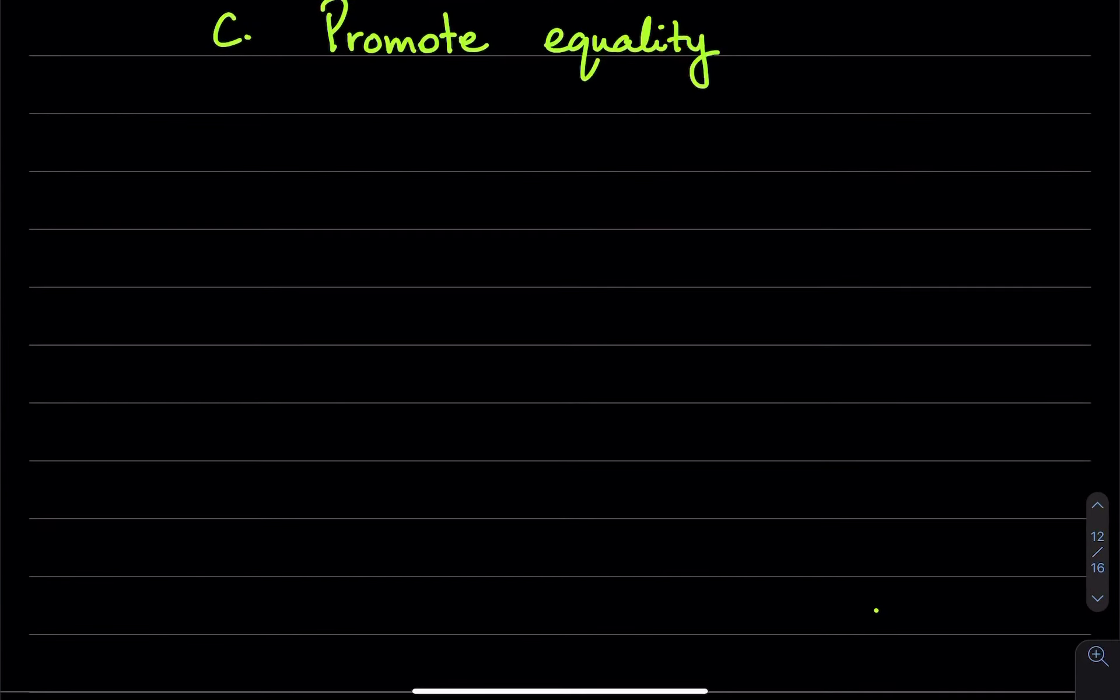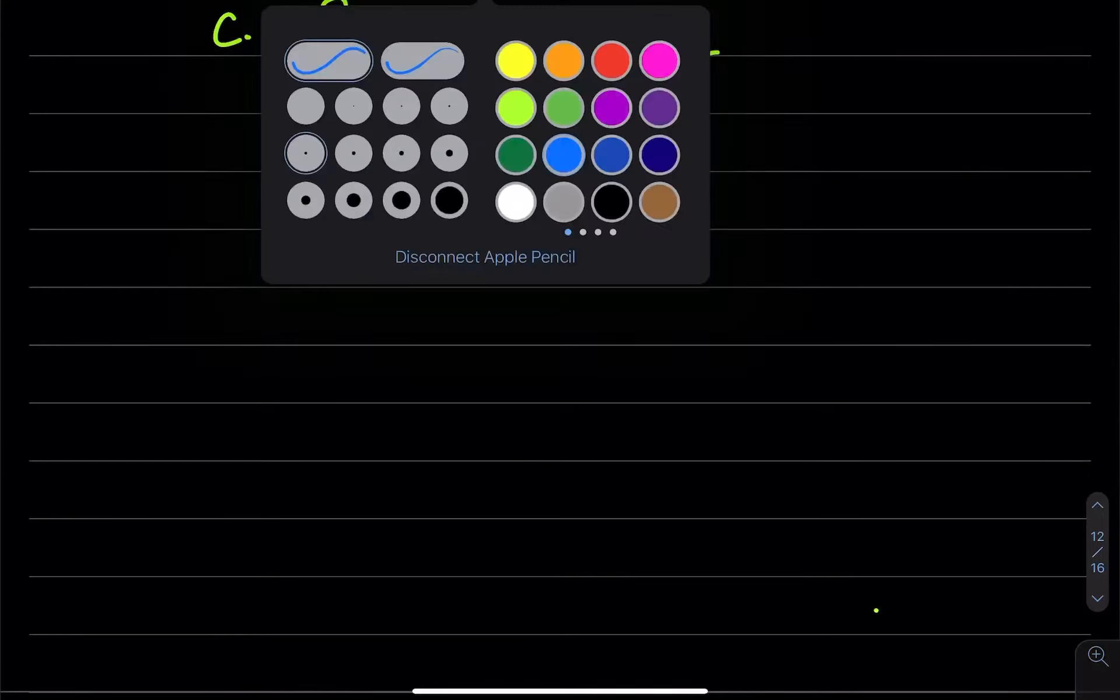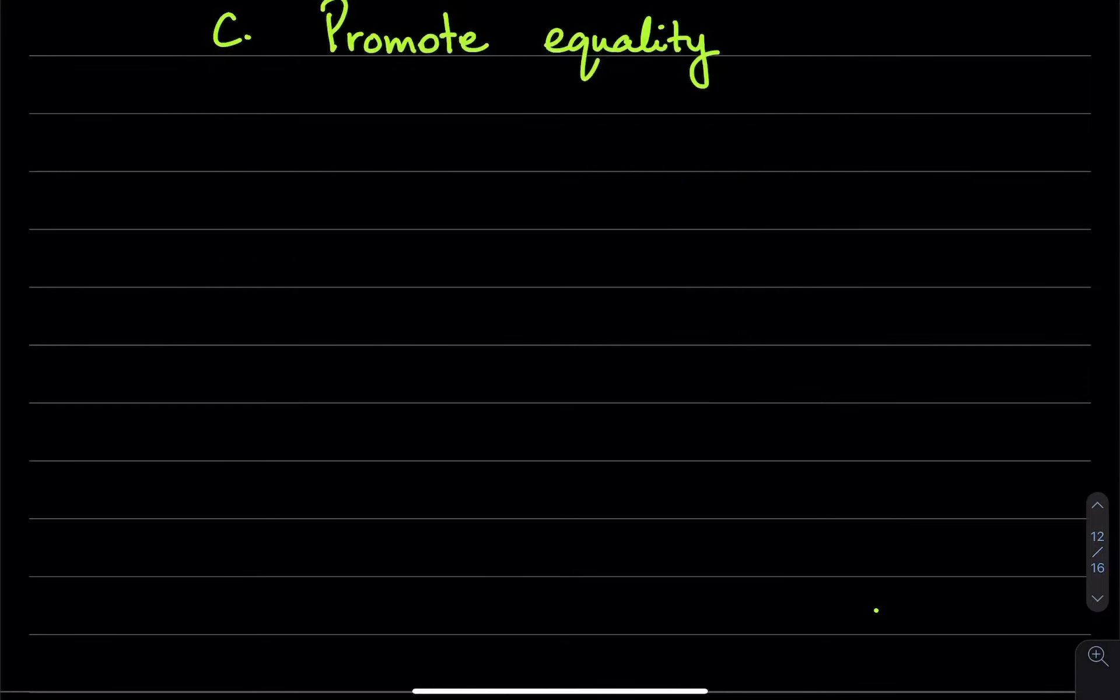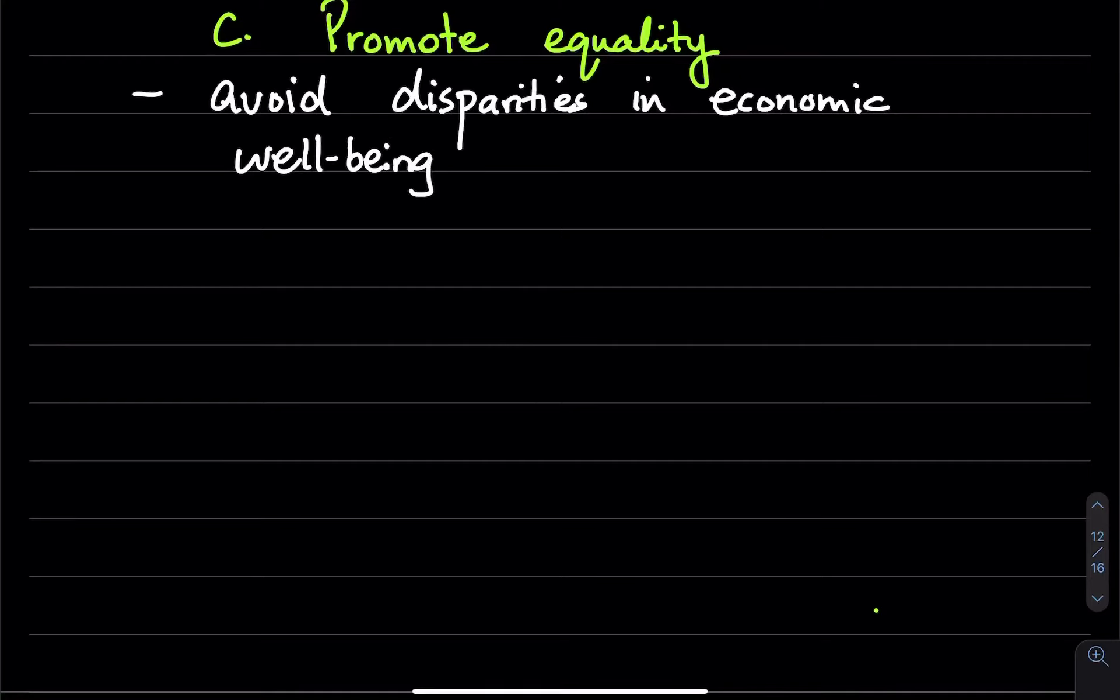The third idea behind why we would need governments is for them to promote equality. So governments can promote equality in many ways. The idea here is that they want to avoid disparities in economic well-being.